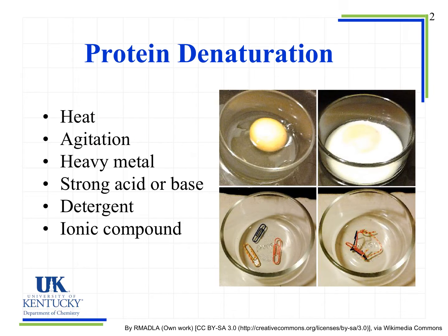If we put a heavy metal in there, it interferes with some of the interactions happening between different parts of the protein. A strong acid or base will produce H⁺ or OH⁻ in water that interfere with those interactions, and the change in pH will cause some of those interactions to break. Detergent can also break those interactions — this is why we use detergent to wash our clothes. A lot of stains we get on clothing are from proteins, and detergent helps break down those proteins.